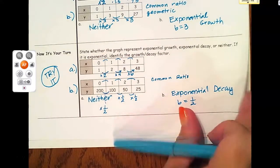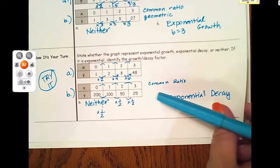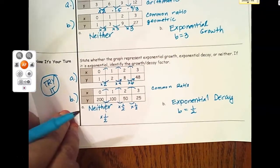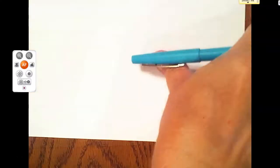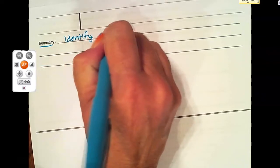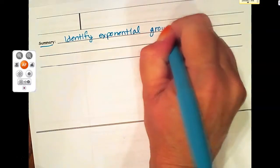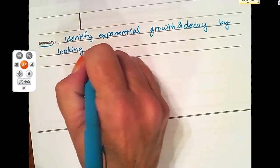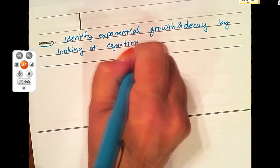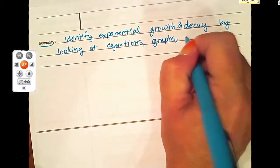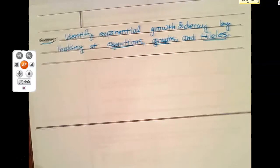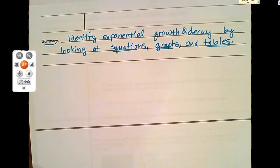That concludes our lesson on exponential growth and decay. There's a lot in that lesson, but mostly you're just identifying whether it's a growth or decay. I'm going to summarize this unit by saying we learned to identify exponential growth and decay by looking at equations, graphs, and tables. It's those three formats that we can look and identify whether something's growing exponentially or not. Thanks for listening.